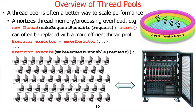Rather than making a new thread for every request, instead we create a thread pool. When a request comes in, we tell the thread pool to take this request and run it on a free thread when one is available. We'll see that this is a much more scalable way to do things.